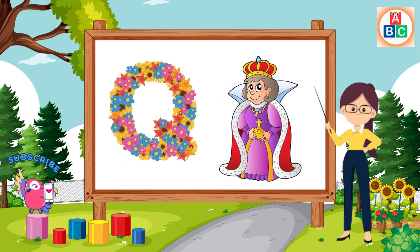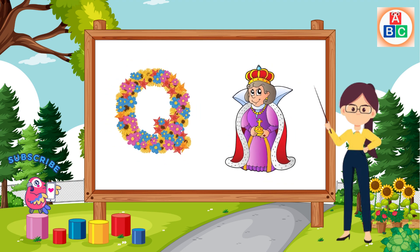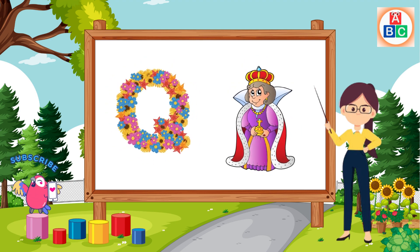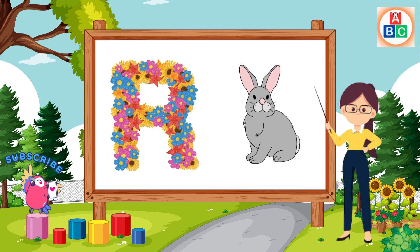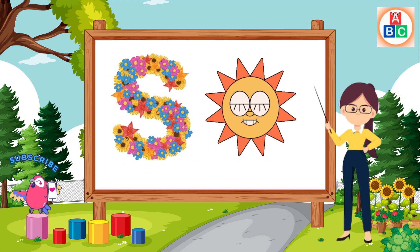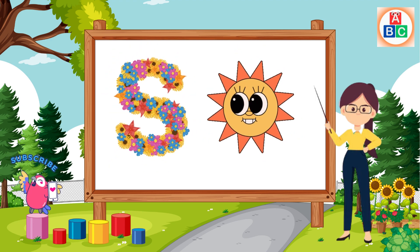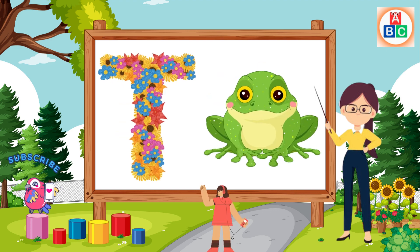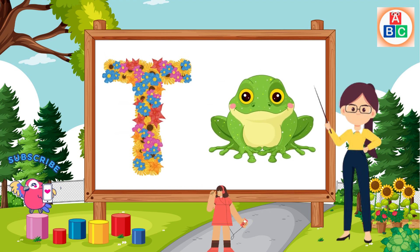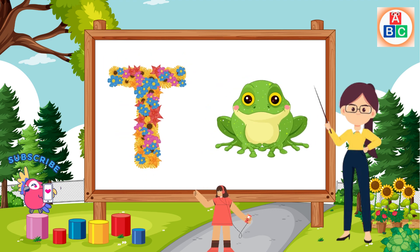Q is for queen, qu-qu-queen. R is for rabbit, r-r-rabbit. S is for sun, s-s-sun. T is for toad, t-t-toad.